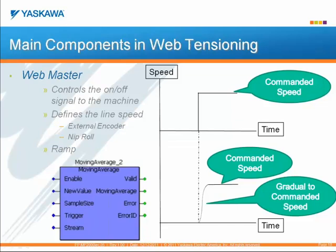The goal of web tensioning is the torque. The most important thing is that we maintain this tension on the material throughout the speed change. Tension is always the primary goal. The webmaster is thought of as the basic control for the system — this is where we define the production rate of the machine so that the other rolls can tension based on that speed with feedback or a draw rate. This can be accomplished by using either an external encoder or a nip roll with a servo attached. Later in the presentation, we'll see how we incorporate the moving average function block to act as a ramp.